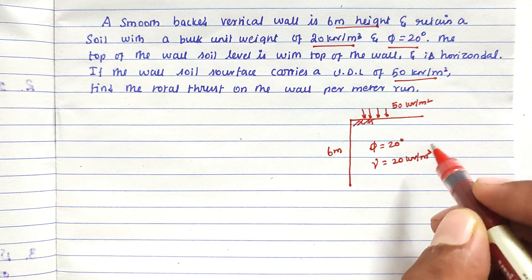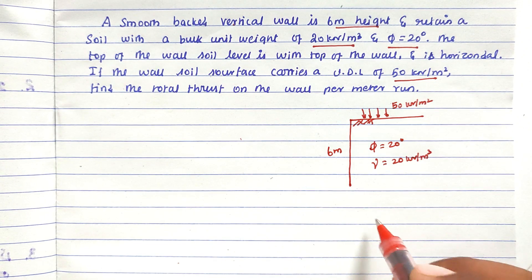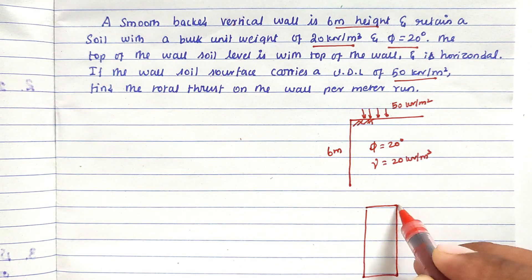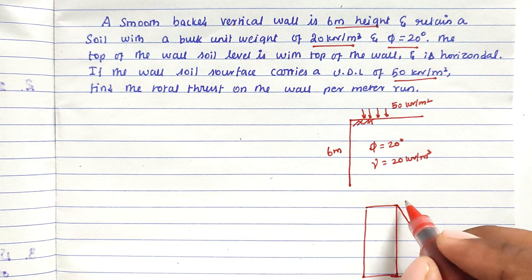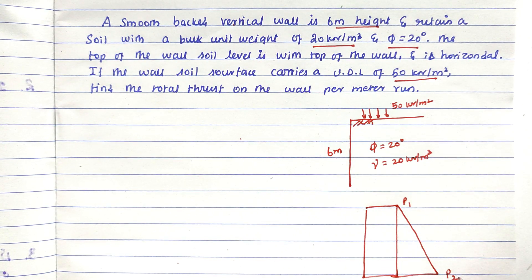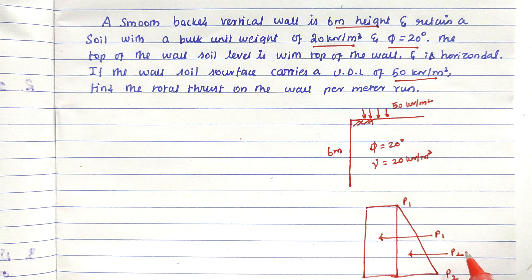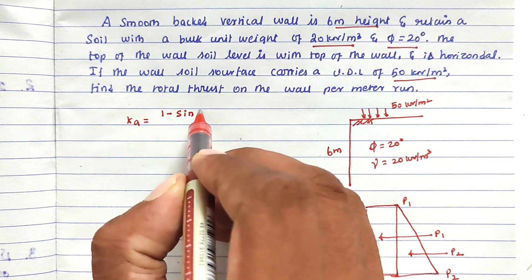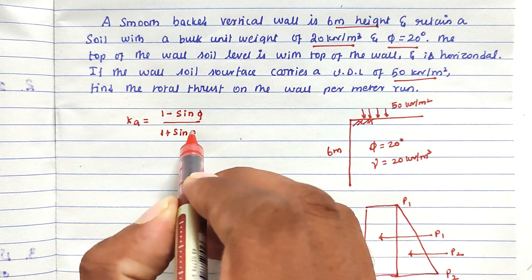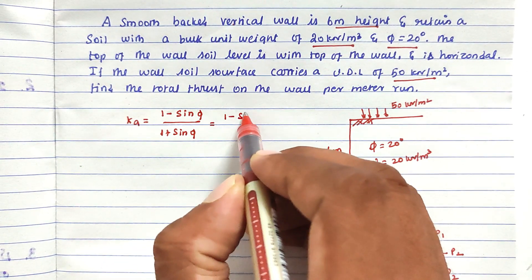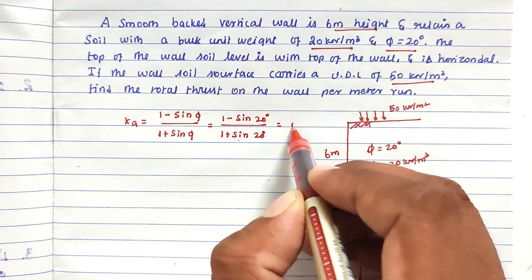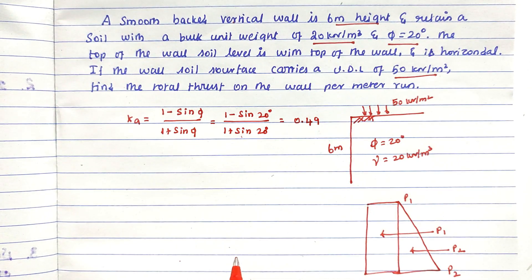First, we have to find out the p1 value and p2 value from the pressure distribution diagram. Now we have to find out the Ka value — the coefficient of active earth pressure. The formula is: Ka equals 1 minus sine phi divided by 1 plus sine phi. With phi equal to 20 degrees, solving this we get Ka equal to 0.49.